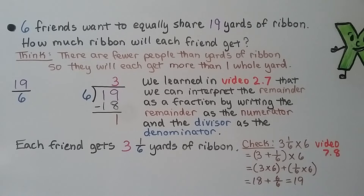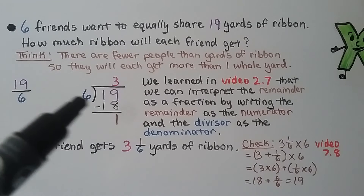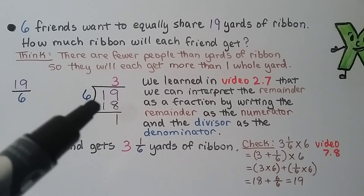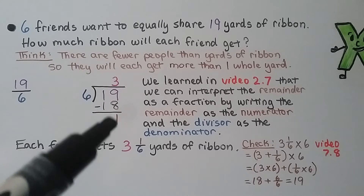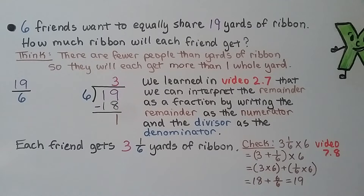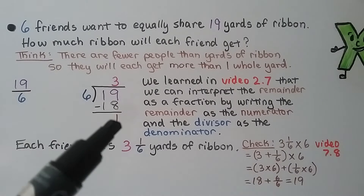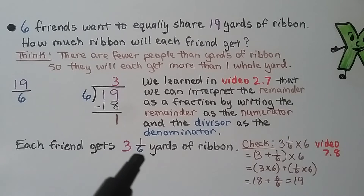6 friends want to equally share 19 yards of ribbon. How much ribbon will each friend get? There are fewer people than yards, so they will each get more than 1 whole yard. We need to do 19 divided by 6 using long division. 6 fits into 19 three times — write a 3 for the quotient. 6 times 3 is 18, subtract from 19, and we get a remainder of 1. We write the remainder as the numerator and the divisor as the denominator, giving us 3 and 1 sixth yards each.